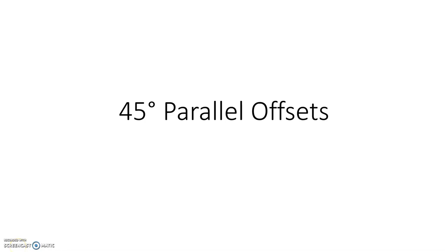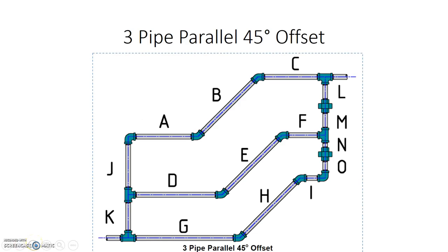This is another plumbing trade calculations video discussing the 45-degree parallel offset. In our picture we have a three-pipe parallel offset. Any parallel can be anything from two pipes onwards; in this case we have three pipes for our example.